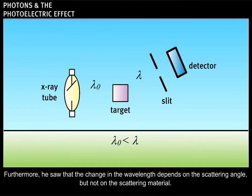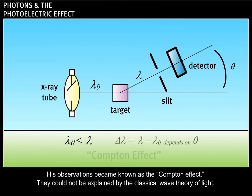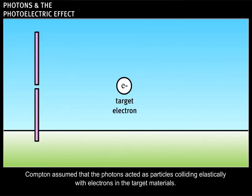Furthermore, he saw that the change in the wavelength depends on the scattering angle, but not on the scattering material. His observations became known as the Compton effect. They could not be explained by the classical wave theory of light. Compton assumed that the photons acted as particles colliding elastically with electrons in the target materials.